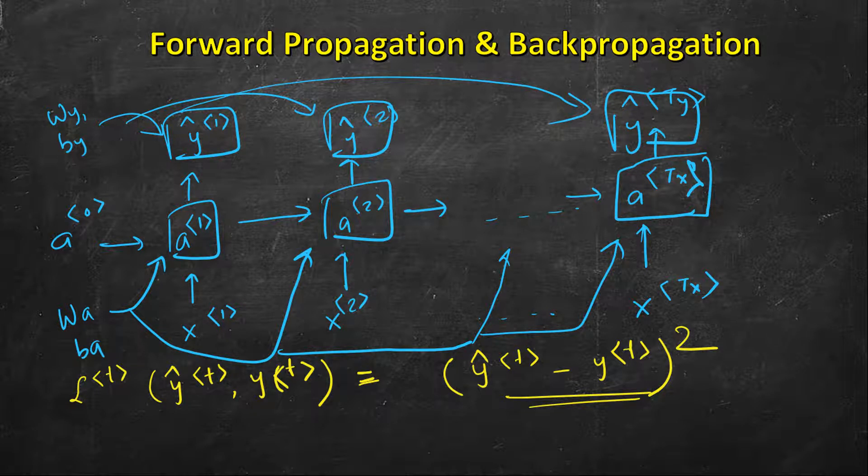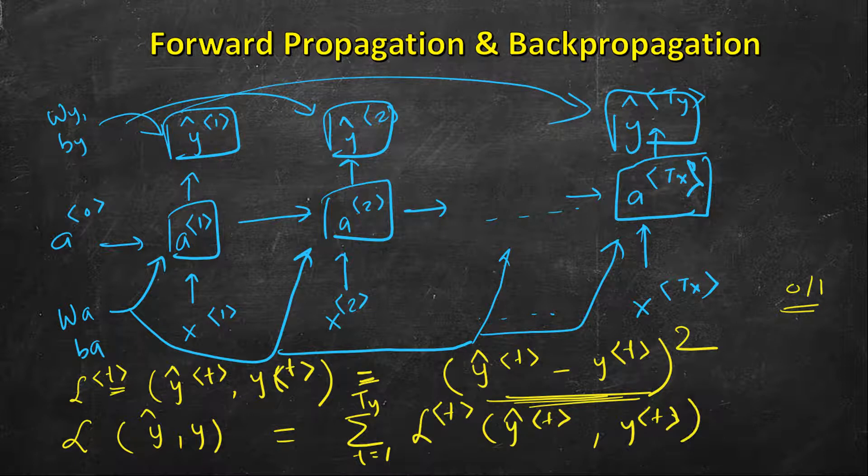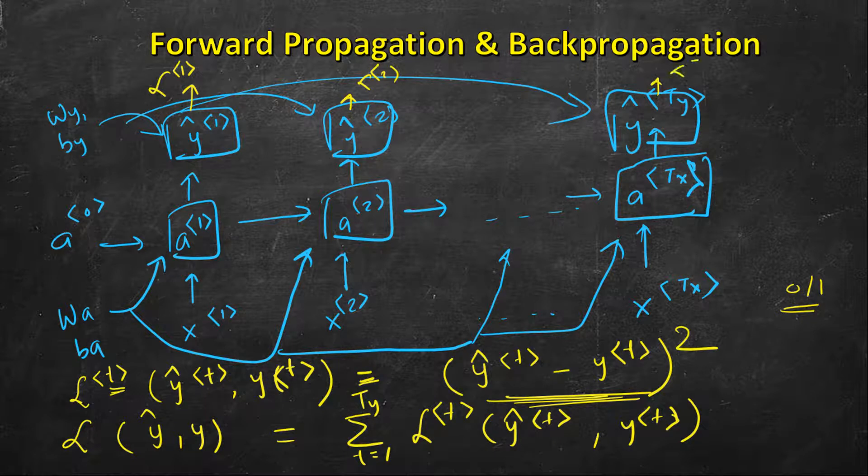But in practice, it will depend on the application. For example, named entity recognition, where it's a zero or one thing, we can use binary cross-entropy loss. But I am taking a simple loss function just for understanding the concepts. The complete loss function would be the sum of all the individual losses. Now we have our loss function, so we can use this calculated y to calculate loss function: l1, l2...l_ty. Using these, we will sum all of these to calculate our final loss.